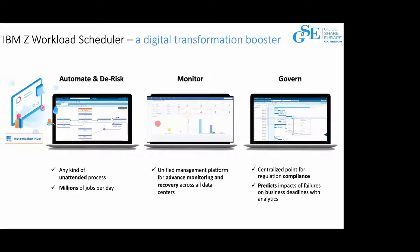IBM ZWS also allows you to optimize workload execution. This can happen automatically since the product itself can take automatic actions to reduce the risk of critical processes missing a service level agreement. The DWC allows you to run queries on critical job networks to verify their risk level — high risk, potential risk, or no risk. When the user sees that there is a risk, they can simulate changes to the plan and visualize in the what-if simulator the impact of those changes, and in this way optimize the workload execution.